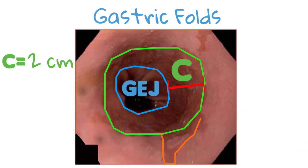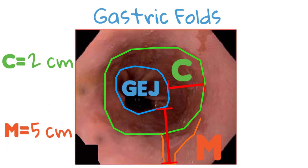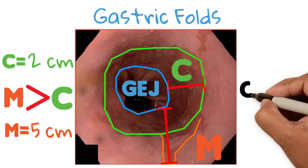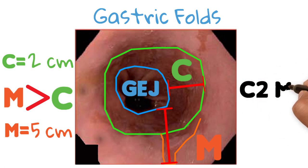We then identify the longest tongue of columnar epithelium. The distance between the gastroesophageal junction and the upper limit of this tongue will be M — in this case, 5 centimeters. M should always be longer than C. This endoscopy has a Barrett's of C2M5 according to the Prague system.